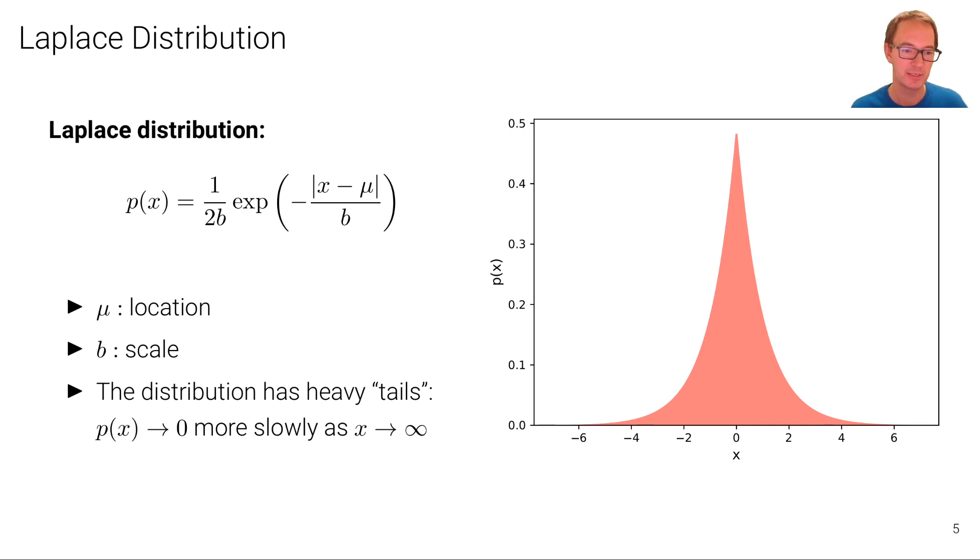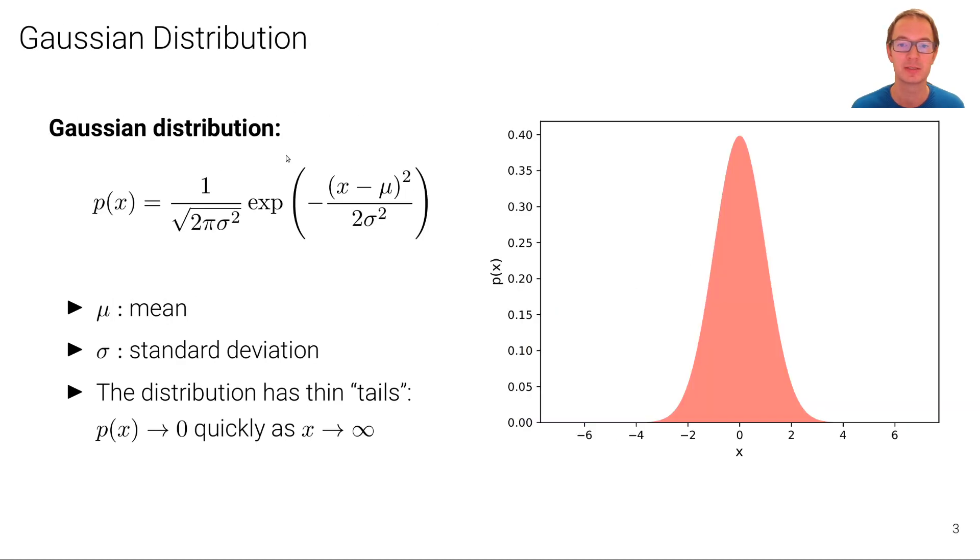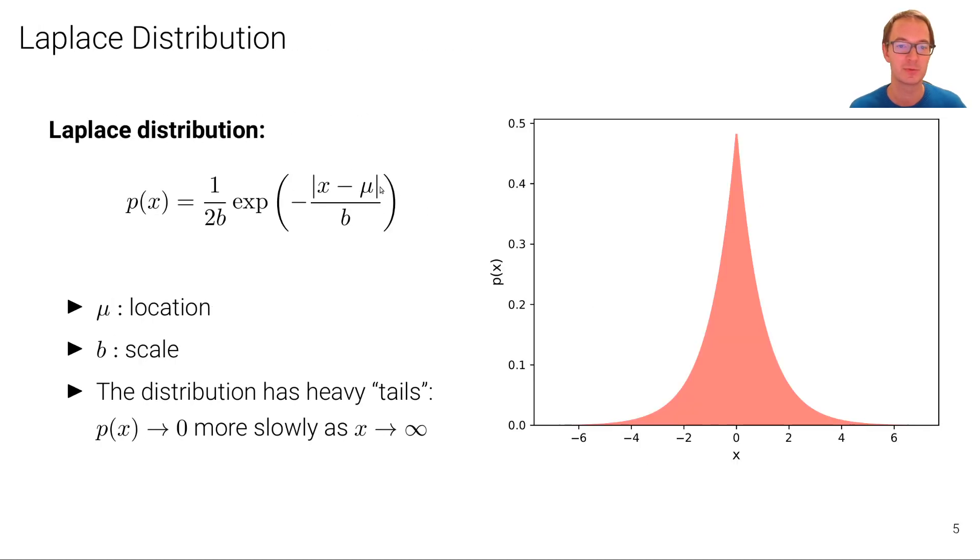A distribution that has a little bit less thin tails, which we often call heavy tails, is the Laplace distribution. That doesn't go to 0 as quickly as in the case of the Gaussian distribution if we let x go to infinity. The Gaussian distribution has a square here, right? So if we take the logarithm, we have a square function. In this case we have no square, we have an L1 loss here. This is the mathematical definition of the Laplace distribution and this is what it looks like. It is more peaky at 0 and it has heavier tails.